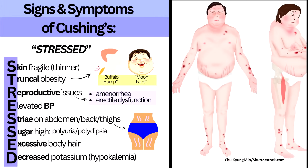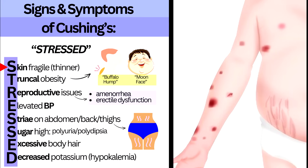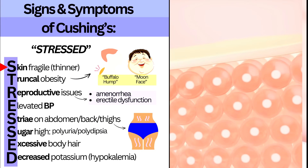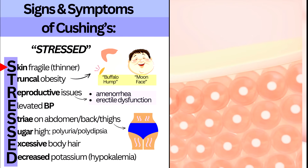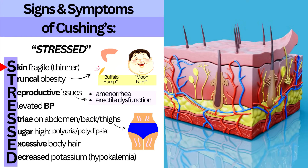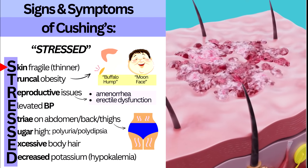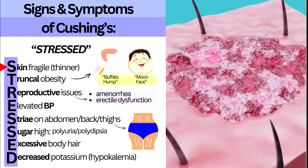Now let's review the signs and symptoms of Cushing's using the mnemonic STRESS — because this body is completely stressed out. S is for Skin fragile: the person will have thinning skin because excess cortisol alters protein metabolism and affects collagen, causing the skin to lose tightness and resilience. Fat metabolism is also affected, altering sub-Q fat distribution. The skin is fragile, tears easily, and takes a long time to heal because the immune system is suppressed.